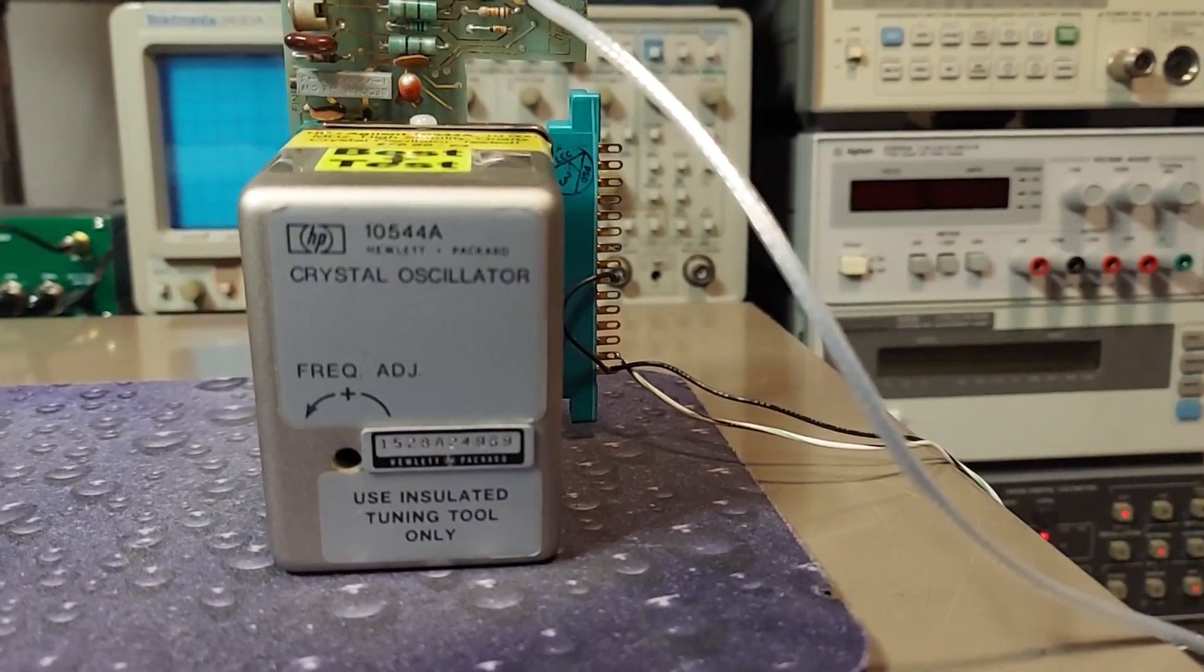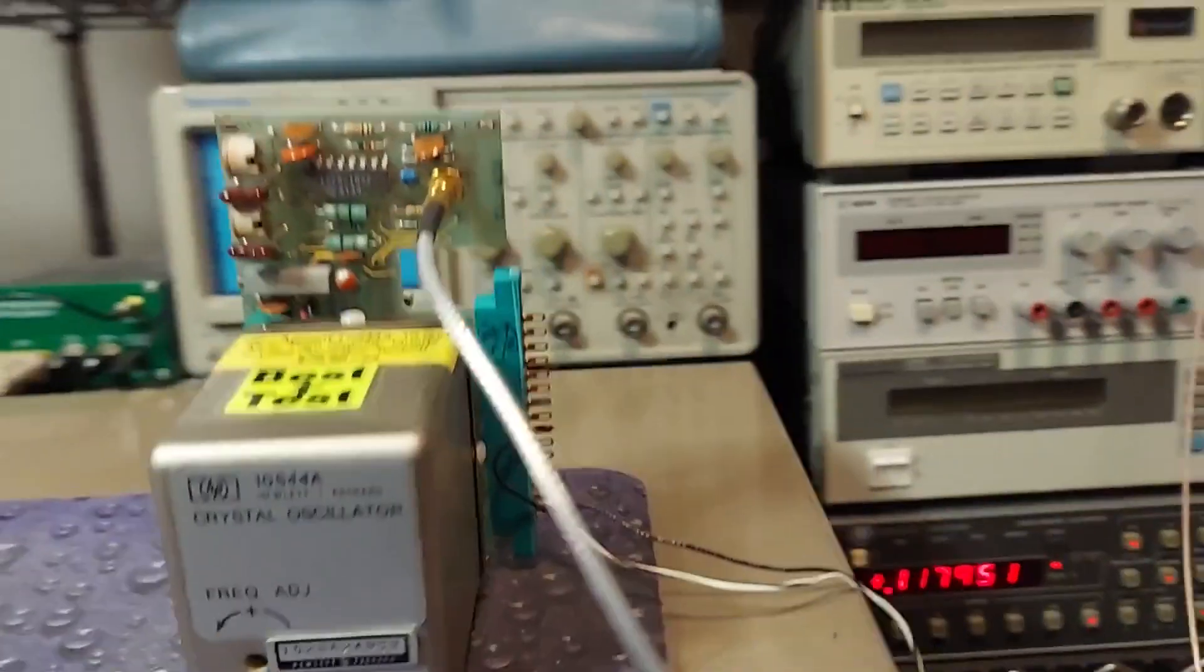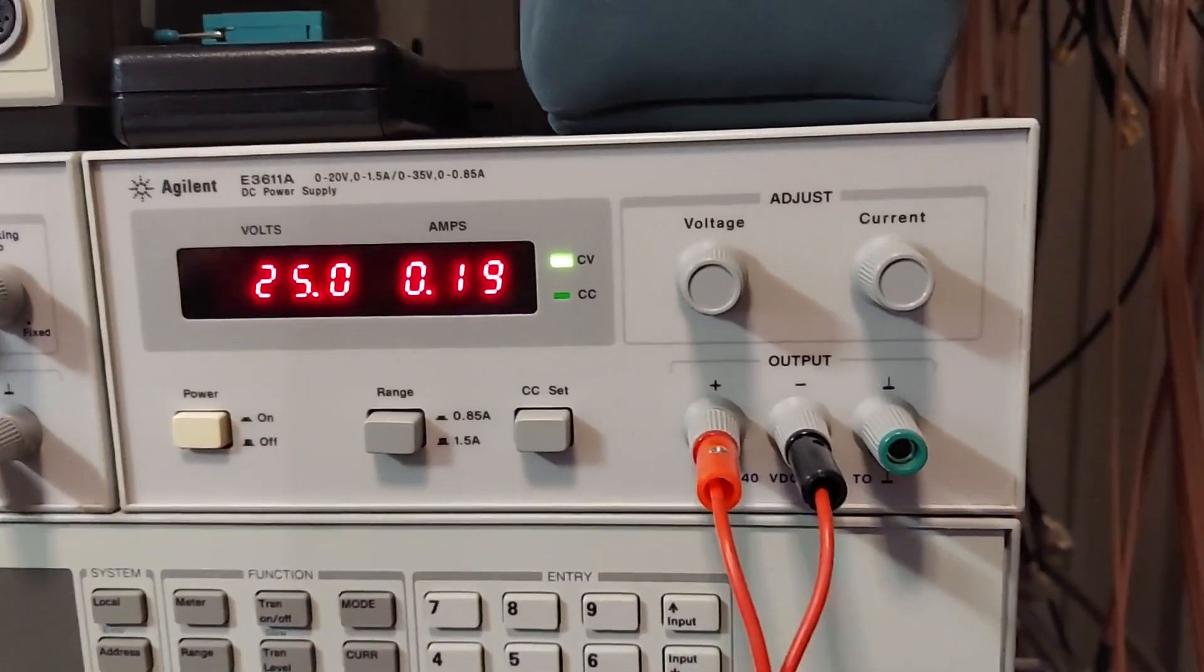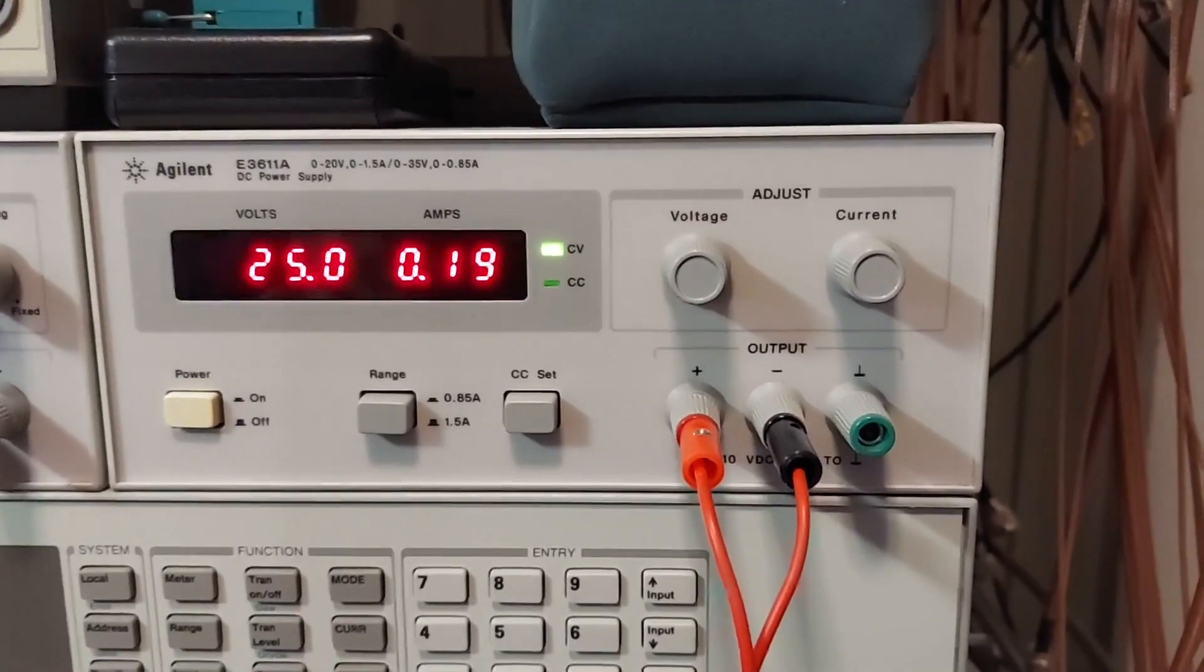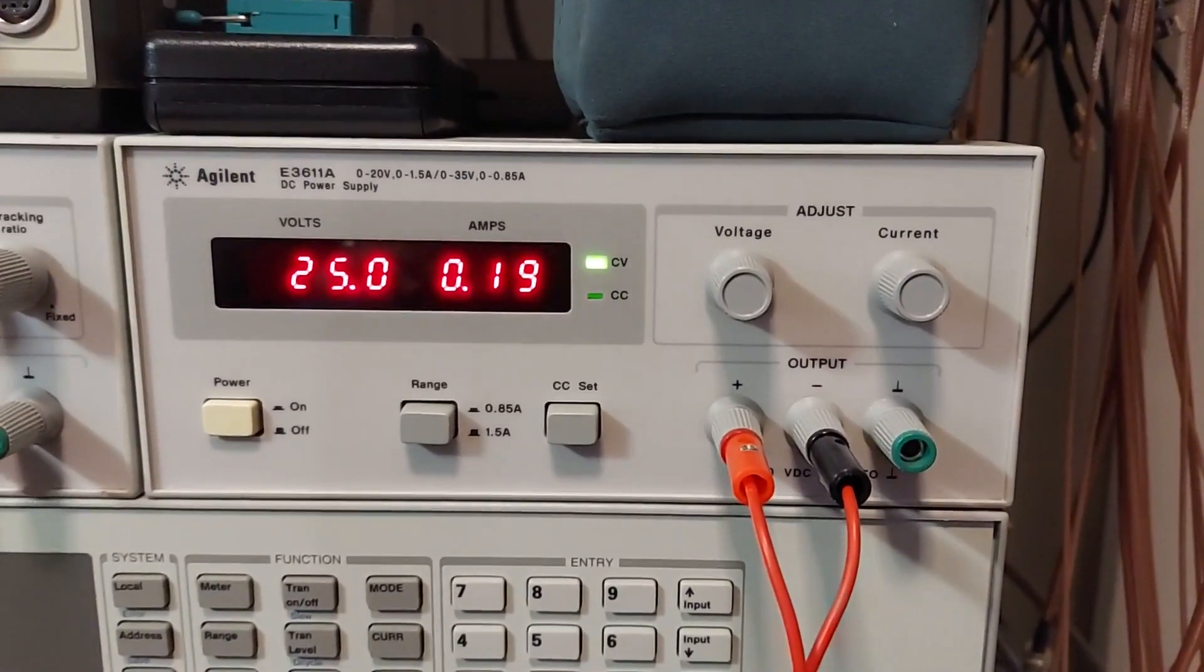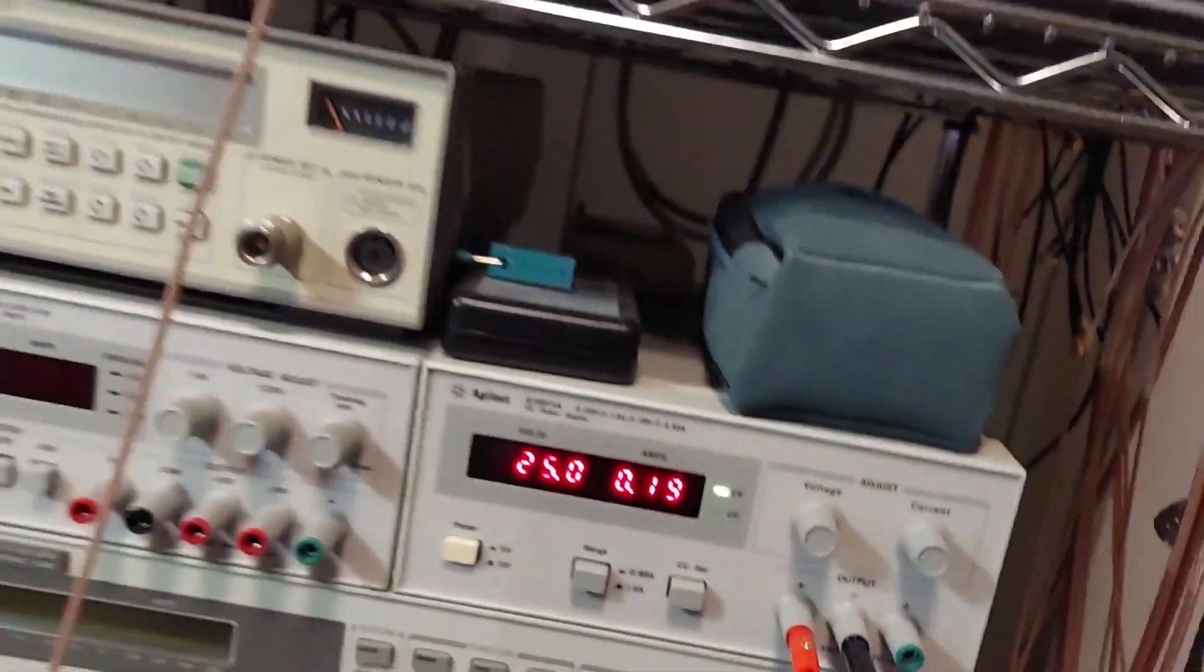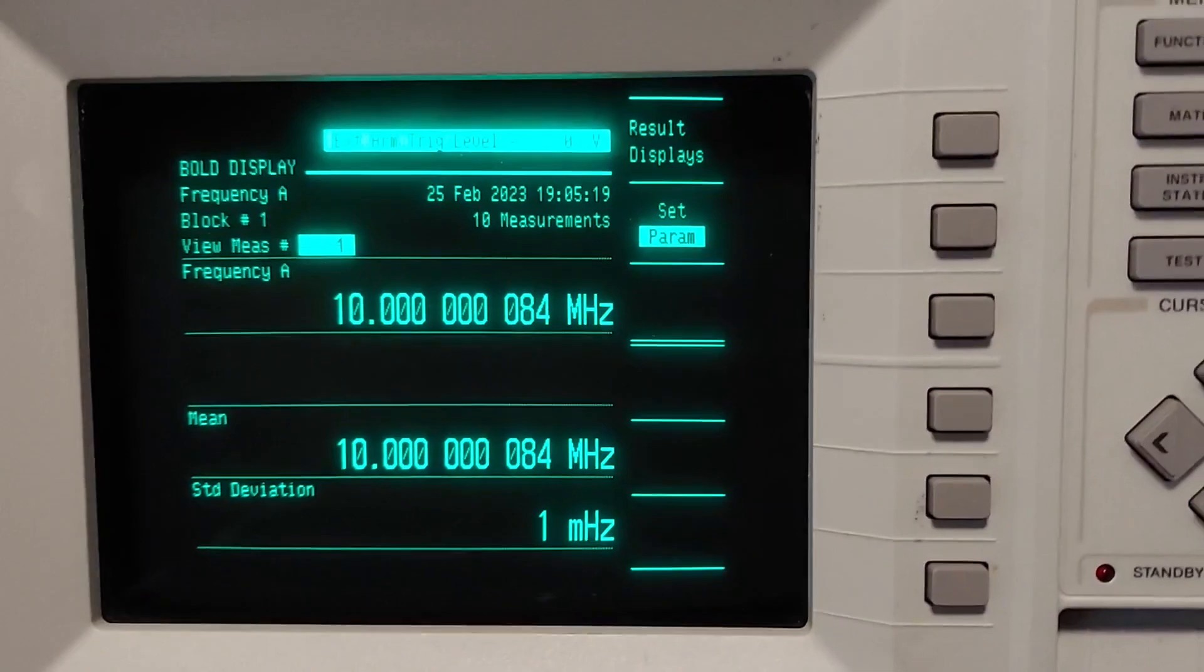Now I've had this thing on for several hours. I've been powering it off a power supply here at 25 volts. Initially when you fire it up and it warms up, it draws about 560 milliamps. Now it's down to about 190 milliamps after several hours.